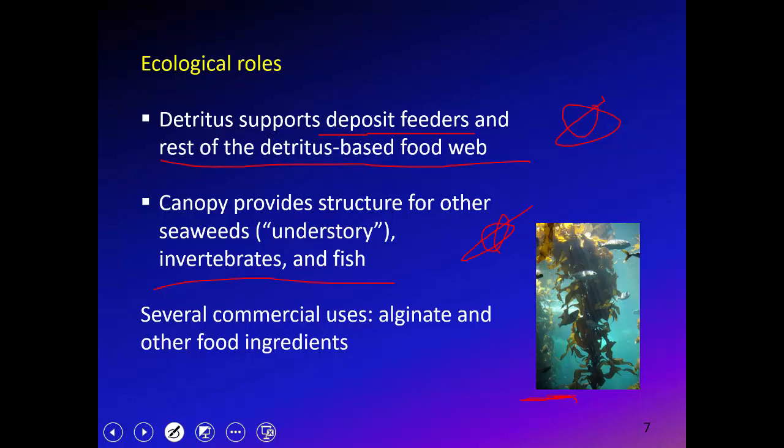A key insight is that all these large plants are primarily detritus-based systems — that is how they support the food chain. They also support other organisms simply by providing physical structure. Even if they provided no carbon at all, just being there gives other organisms a place to live. Kelp also has direct commercial uses: alginate, a polysaccharide, is used in various food products and in microbiology. Japan is especially famous for using kelp in various dishes.